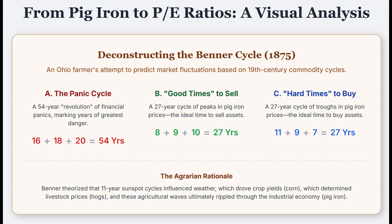Samuel Benner was not your typical Wall Street guy. Born in 1832, an Ohioan farmer who also managed an ironworks — pretty successful, actually — until disaster struck. He got wiped out financially by the Panic of 1873, a huge depression, and to make things worse, hog cholera killed his livestock. This wasn't just theory for him; it was deeply personal.